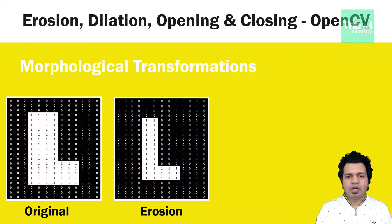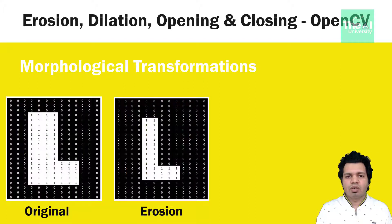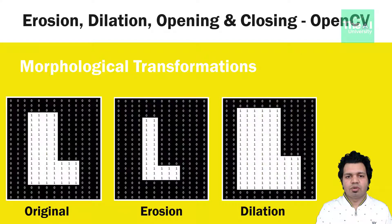In technical terms, the kernel slides through the image as in 2D convolution. A pixel in the original image — either 1 or 0 — will be considered 1 only if all the pixels under the kernel are 1; otherwise it is eroded or made 0, thereby discarding the boundary. The extent of erosion depends on the size of the kernel.